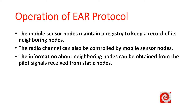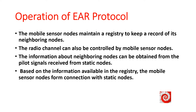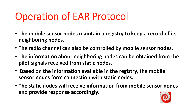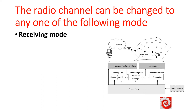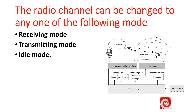The information about maneuvering nodes can be obtained from the pilot signals received from static nodes. Based on the information available in the registry, the mobile sensor nodes form connections with static nodes. The static nodes will receive information from mobile sensor nodes and provide a response accordingly. The radio channel can be changed to any one of the following modes: a receiving mode, a transmitting mode, or an idle mode. In these three modes, the radio channel is active.